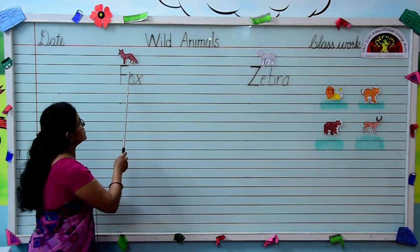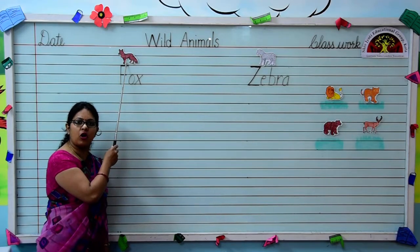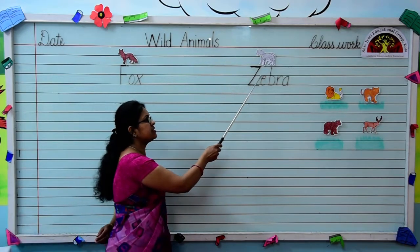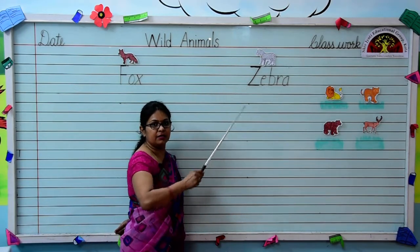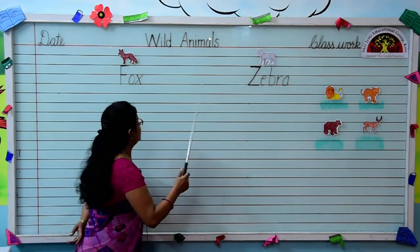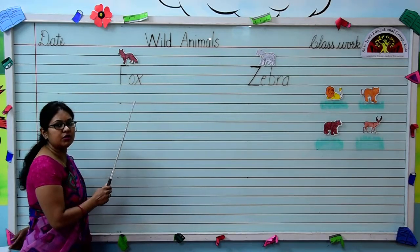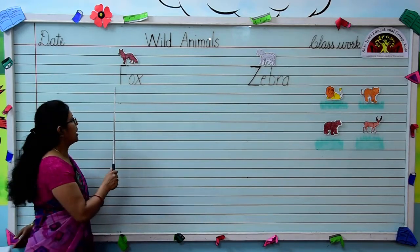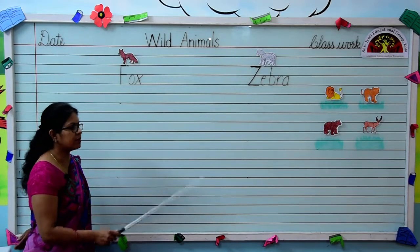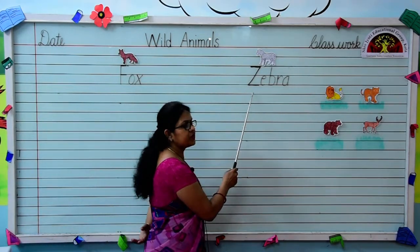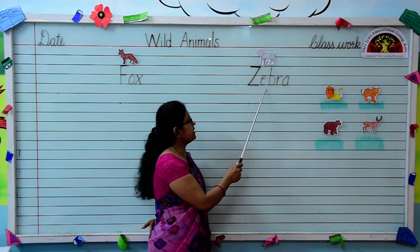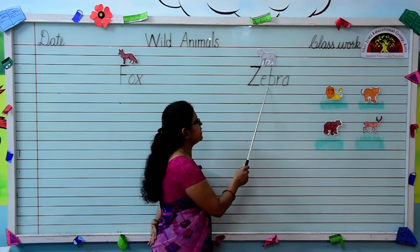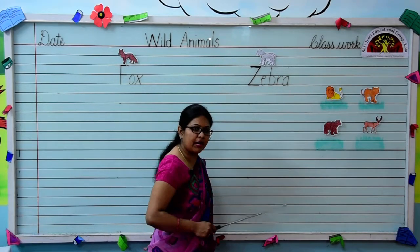Which animal is this? This is fox. And which animal is this? This is zebra. What is the spelling of fox? F-O-X, fox. And what is the spelling of zebra? Z-E-B-R-A, zebra.